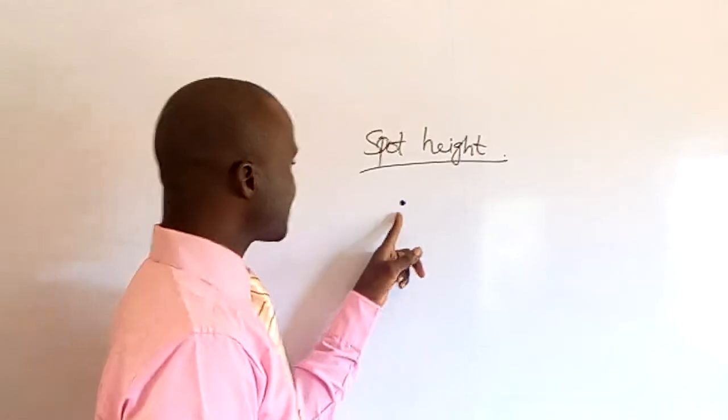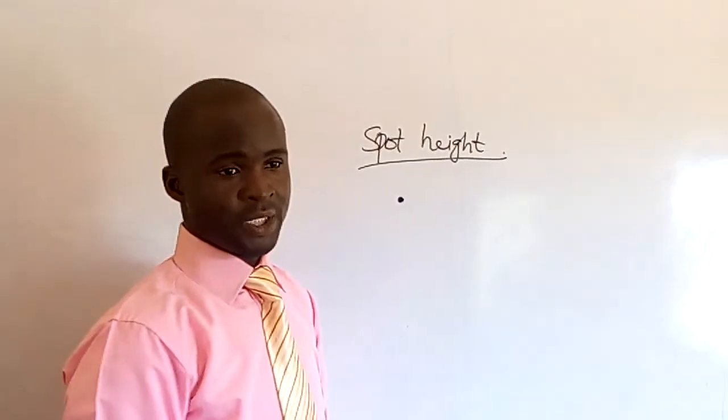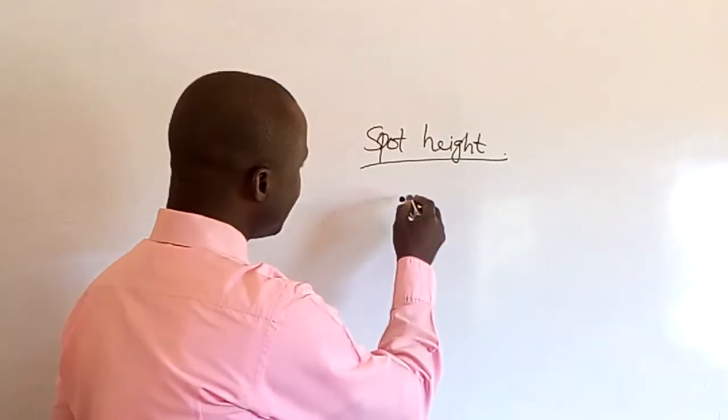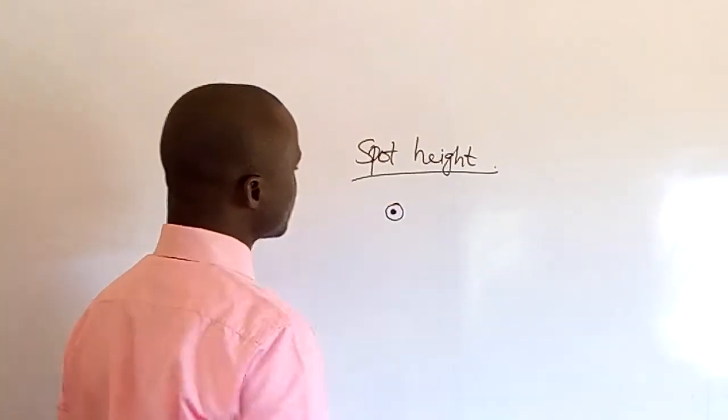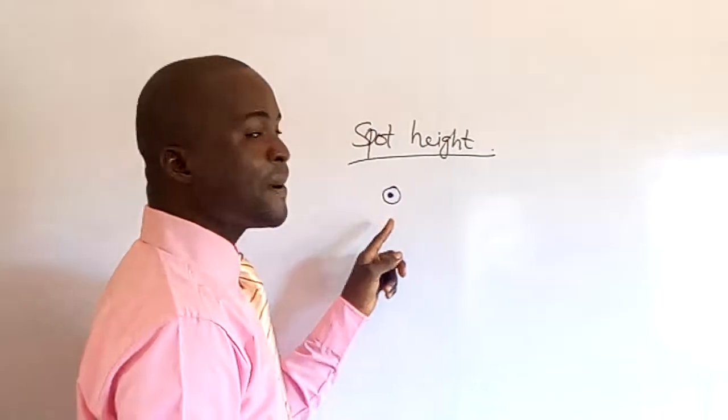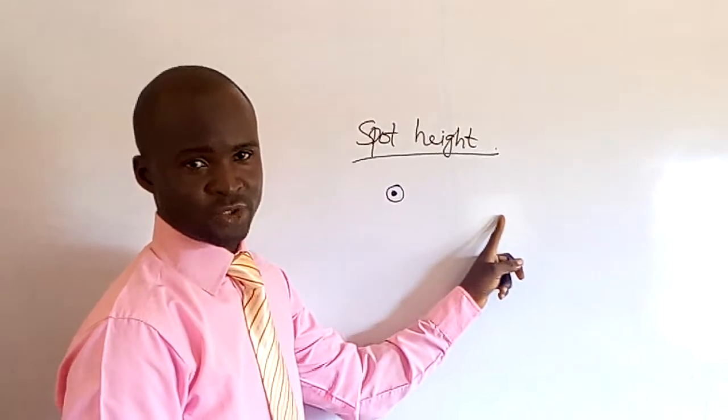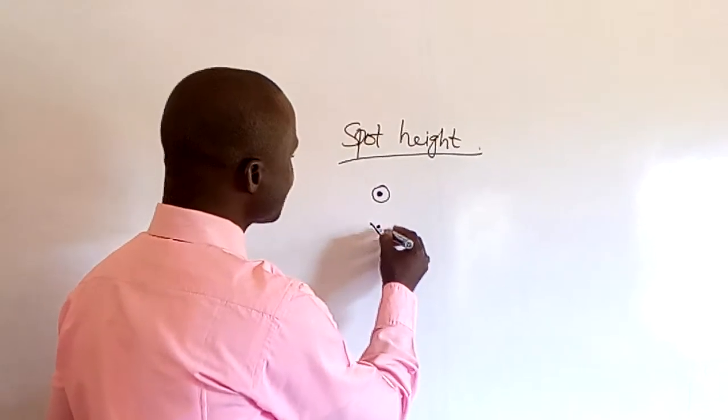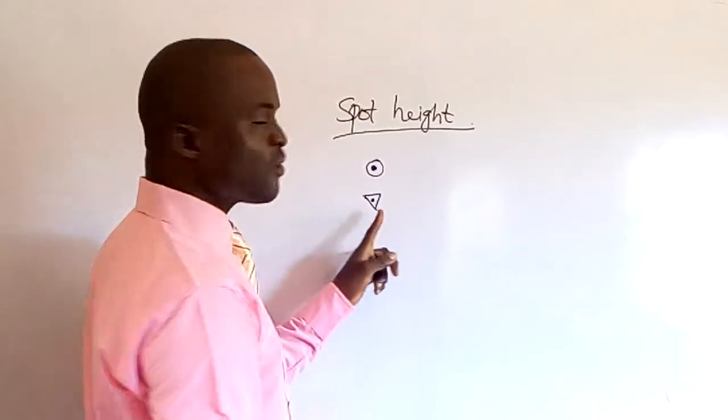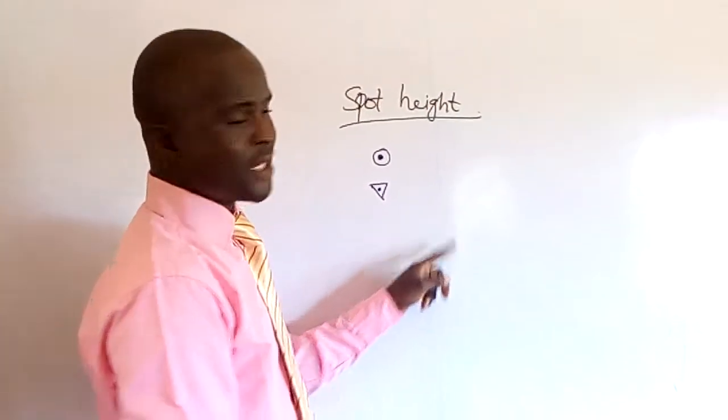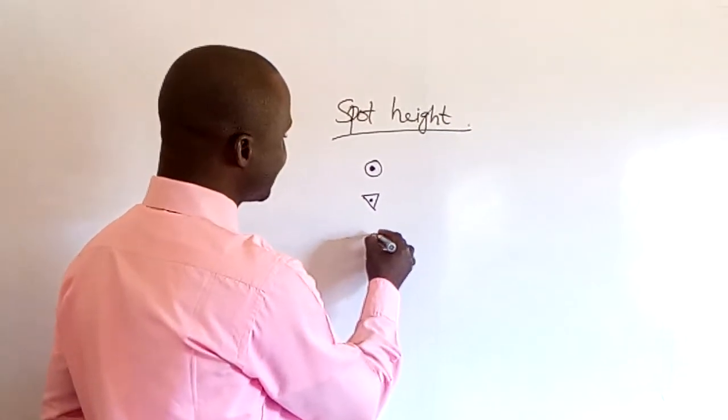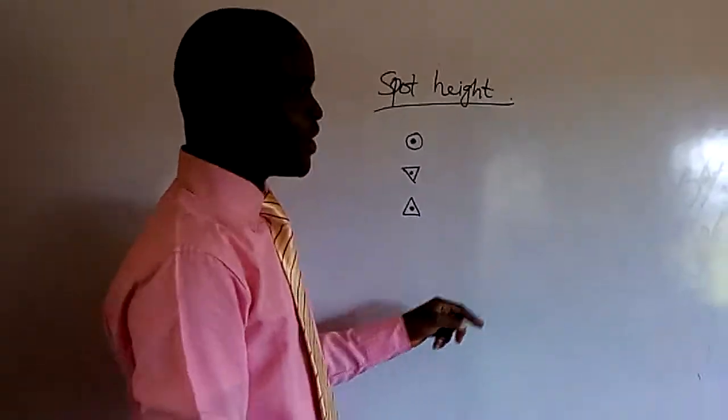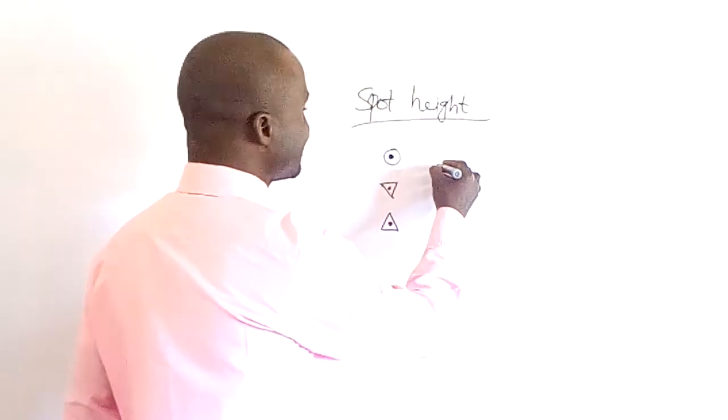When you look at this, in mathematics it means multiplication. In English language, this is full stop. But in geography it means another thing. If you have a symbol like this with three dots, it means minor trigonometric station. If you have it like this, it means secondary trigonometric station. And if you have another dot like this, this is primary trigonometric station.